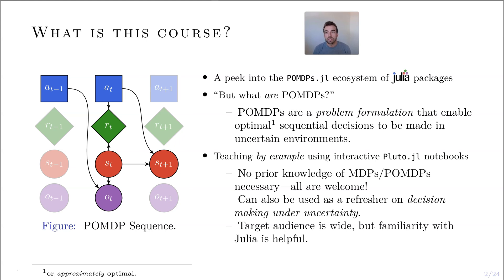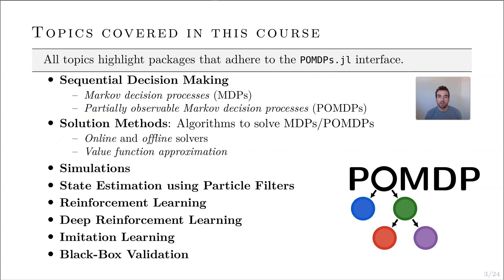This course is primarily taught by example. I use interactive Pluto notebooks to both show the code and to have interactive visualizations so that you can learn along the way and try to run this on your own machine. I don't expect any prior knowledge on MDPs or POMDPs, so all are welcome. People can use this as a refresher for decision making under uncertainty. Since the target audience is pretty wide, I do expect some familiarity with Julia, which will be helpful.